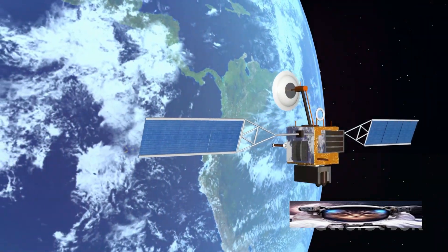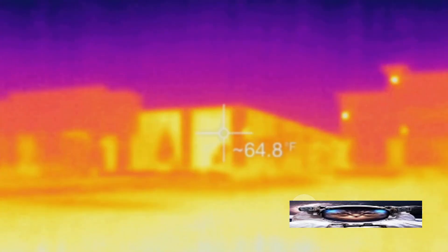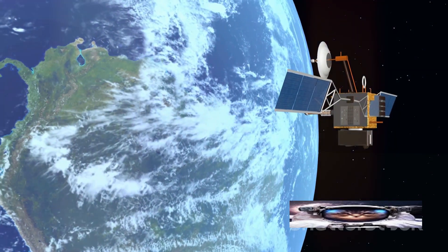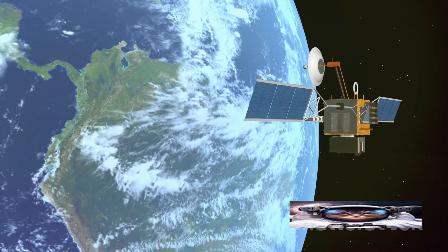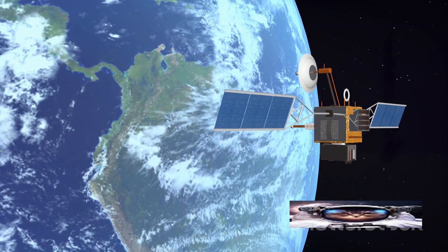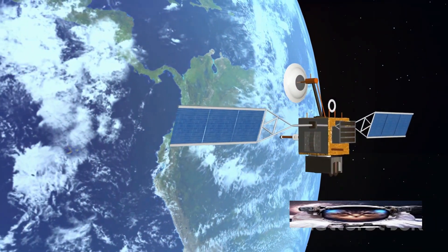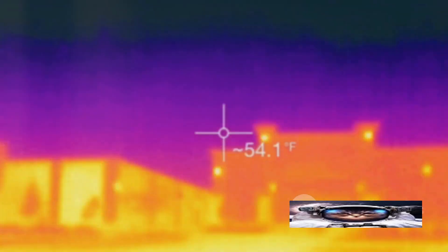All these instruments, from thermal infrared sensors to multispectral scanners and radiometers, are the eyes and ears of our satellites. They collect the raw data that forms the cornerstone of our understanding of climate change.